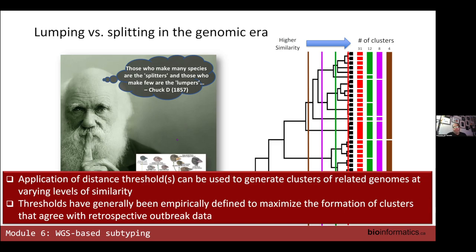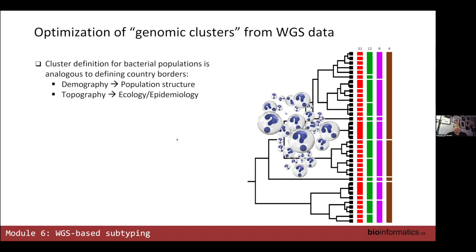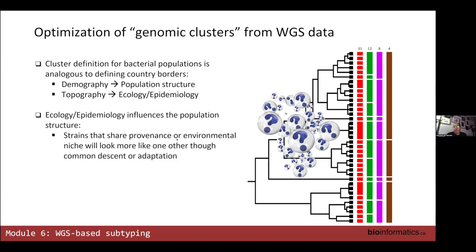When people have been doing this in the context of epidemiology, a lot of the work has been based on taking outbreak data and then trying to develop thresholds that make the outbreaks work — empirically determined based on outbreak data. From my perspective, there's a lot of information to inform proper thresholds, including things like estimating whether certain thresholds capture shared environmental niche or are more likely to capture common descent.